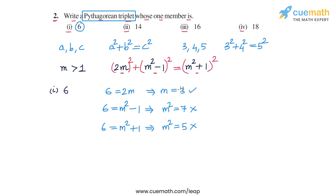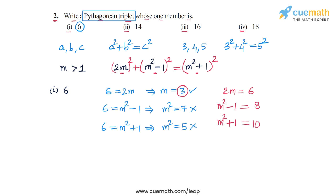The only valid value is M = 3. For M = 3, the three members of the Pythagorean triplet are: 2M = 6, M² − 1 = 9 − 1 = 8, and M² + 1 = 9 + 1 = 10. So the answer for part 1 is that 6, 8, and 10 is the required Pythagorean triplet, of which 6 is a member.